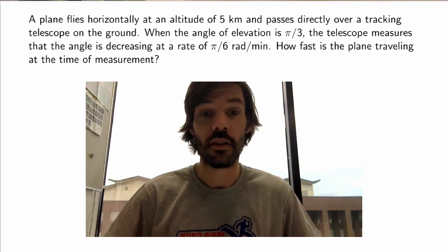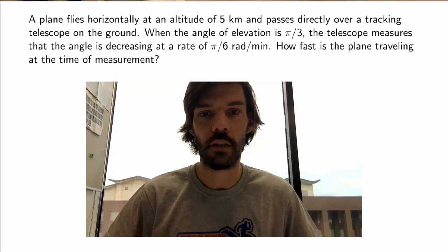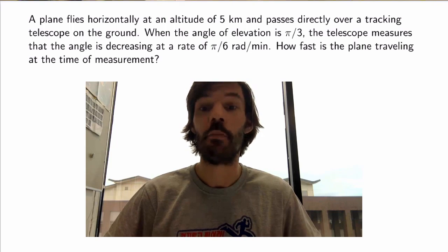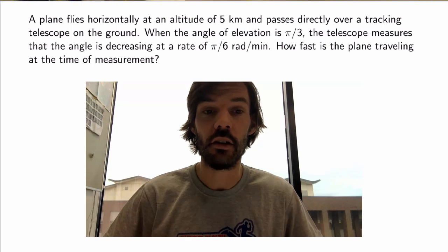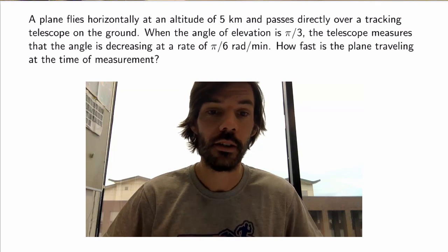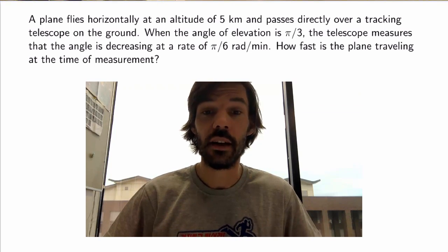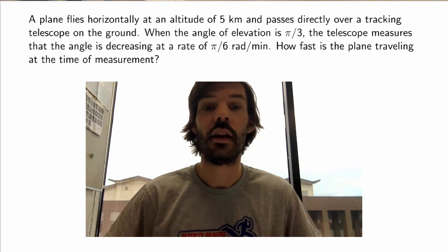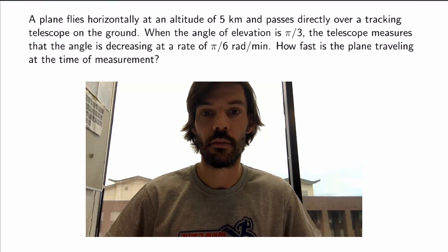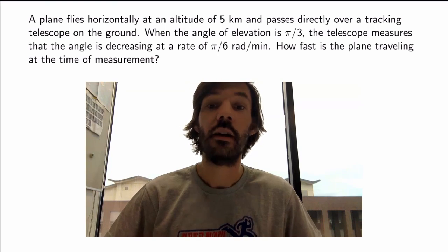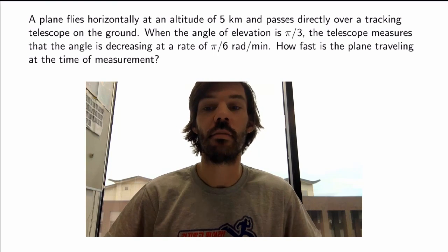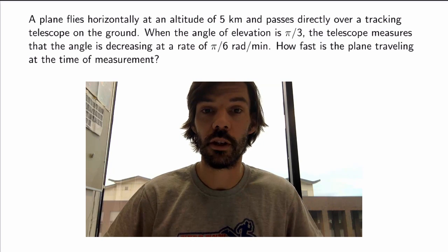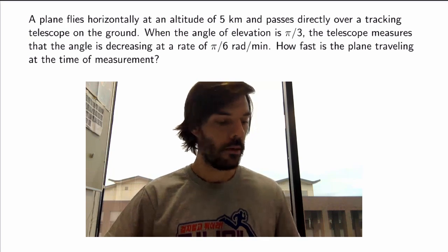So here's a typical example of a related rates problem. A plane flies horizontally at an altitude of 5 km and passes directly over a tracking telescope on the ground. When the angle of elevation is π over 3, the telescope measures that the angle is decreasing at a rate of π over 6 radians per minute. How fast is the plane travelling at the time of measurement?